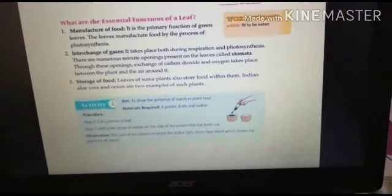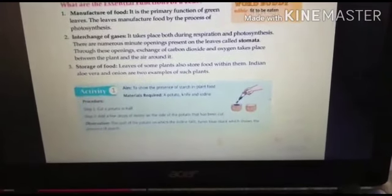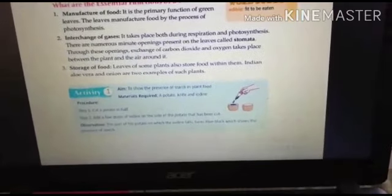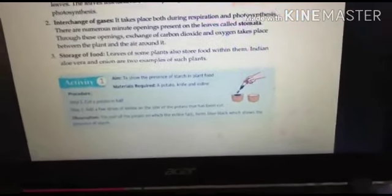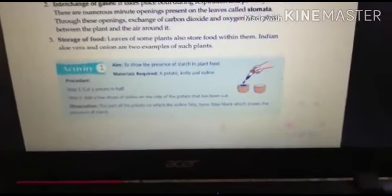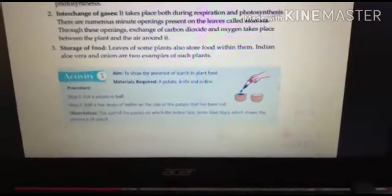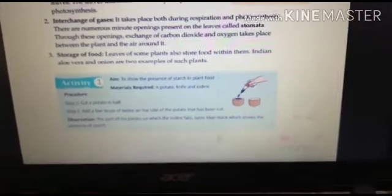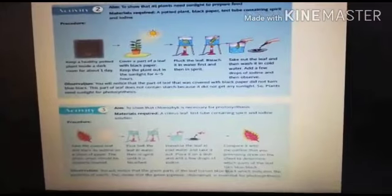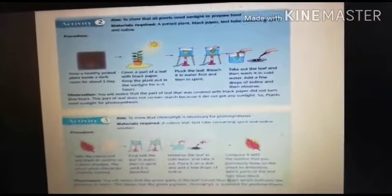To summarize the activities: the first activity shows the presence of starch in plants. We need a potato, a knife, and iodine. When we put drops of iodine on the potato it becomes blue-black, showing that starch is present in plants.